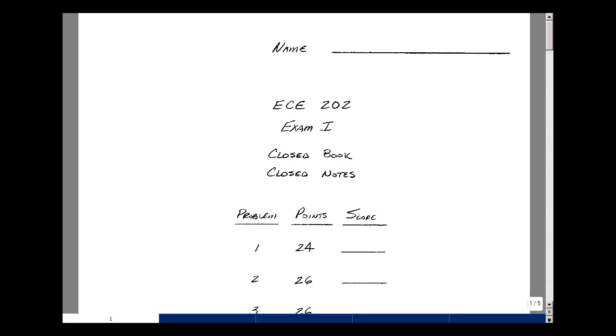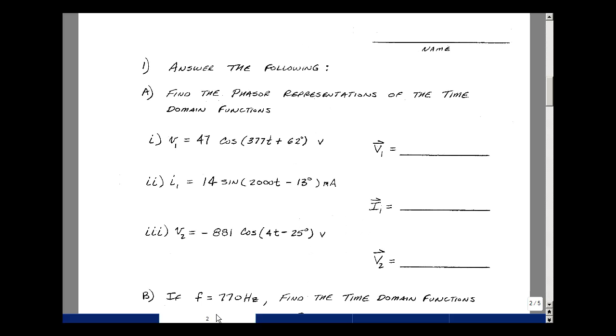Now let's go over the exam and you'll have 60 minutes to do the test. There are several parts in problem number one. The first is to find the phase representations of the following time domain functions. They're given a voltage, a current, and a voltage as a function of a cosine, sine, and a cosine. Can you find the phasor representations? These can be in polar form or rectangular form.